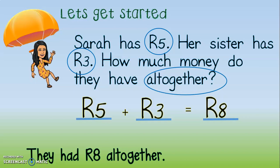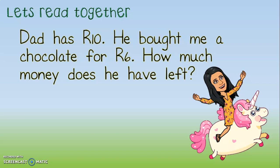Let's try our next example. Let's read together. Let's remember our steps. The first step is to circle the two numbers that will be a part of our sum. The first number is 10 rand, the second number is 6 rand. Well done. One of the words in the word problem tells us if this is a plus or a minus. The word 'left' tells us that this is a minus sum.